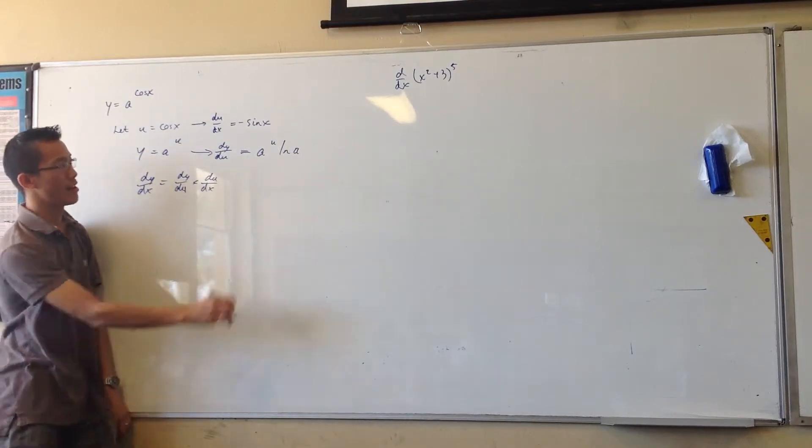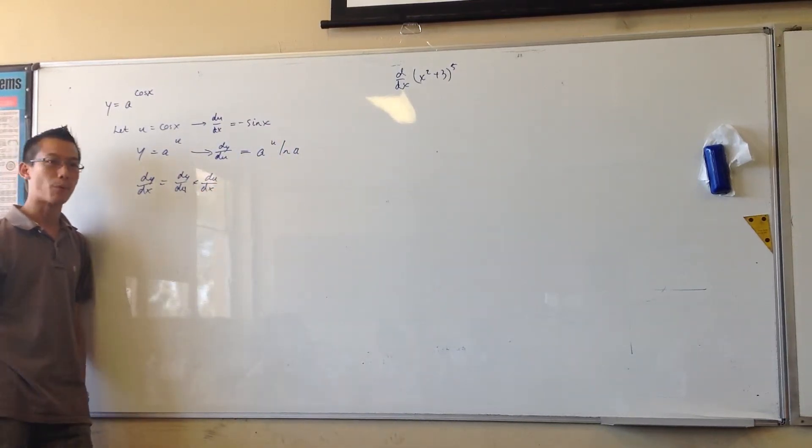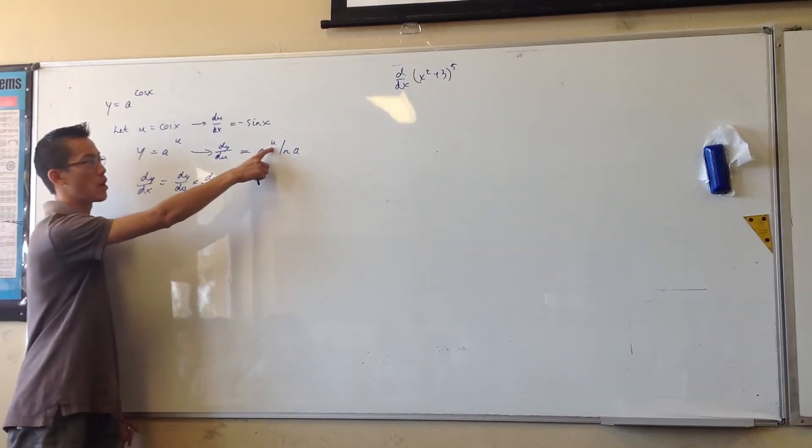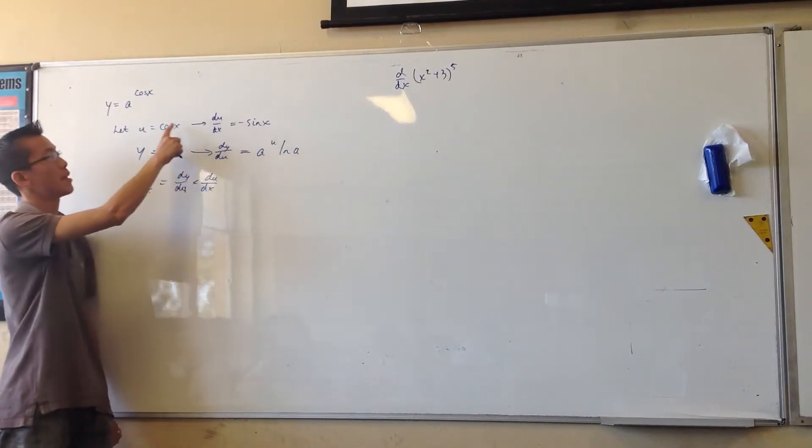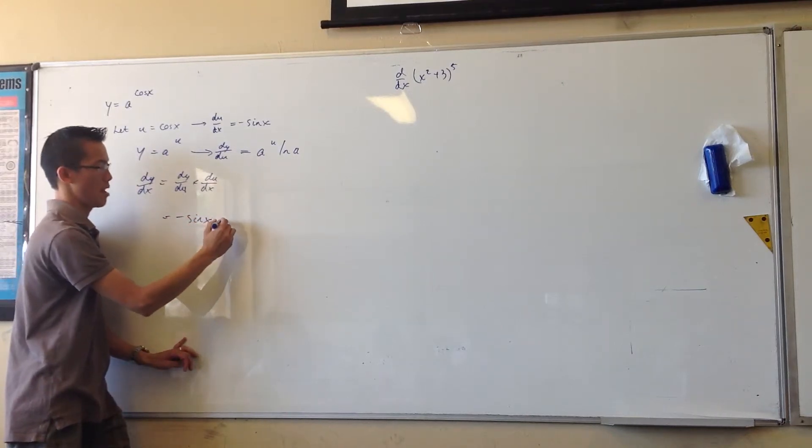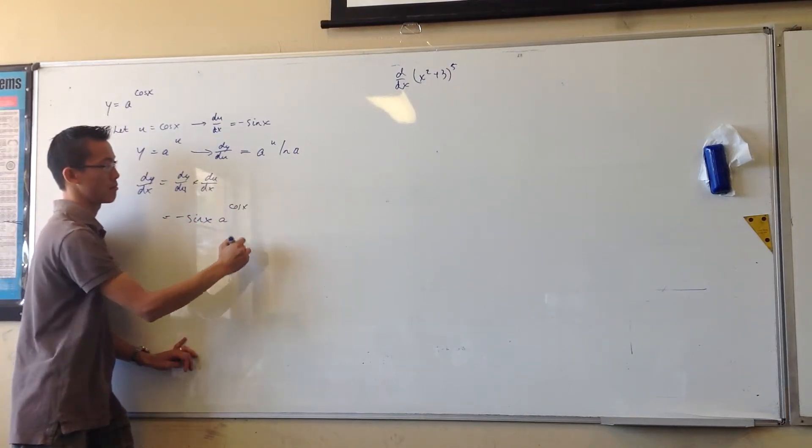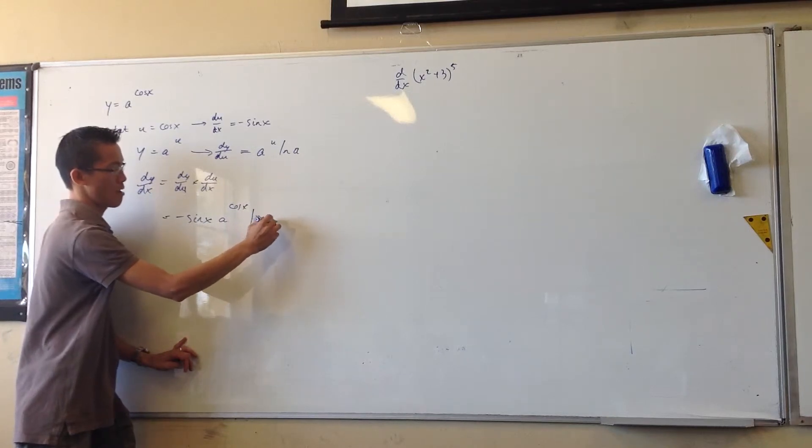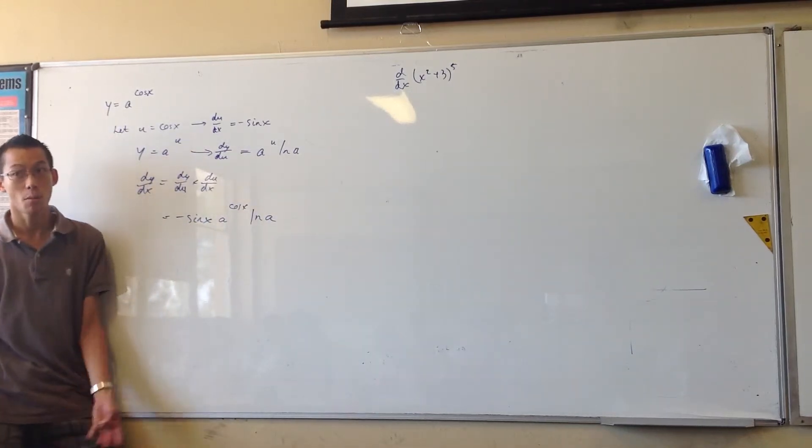And for this next line, I just want to put these in, but I might as well at the same time get rid of all the u's, right? Because there's only one left over, that u there, so I'll just substitute back for what it is. So this is minus sine x, a to the cos x, log a. And we're done, that's it.